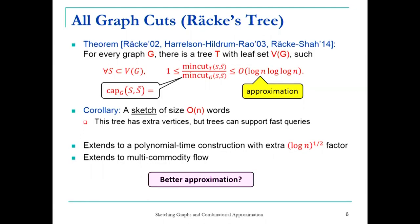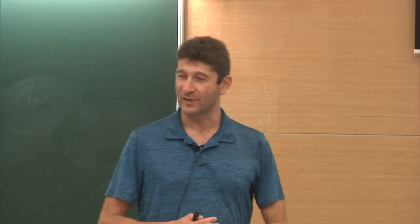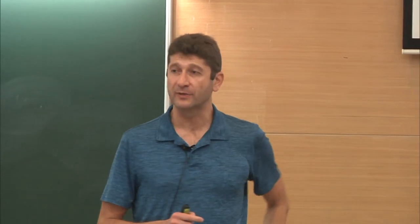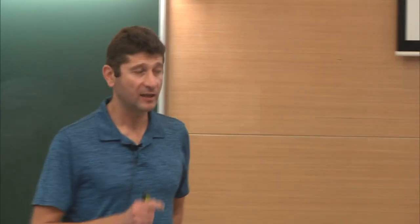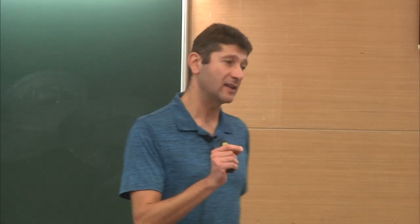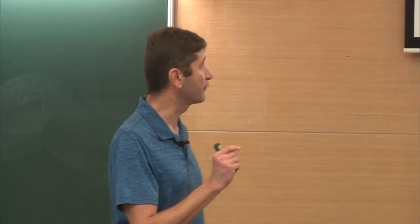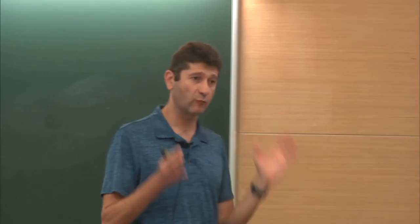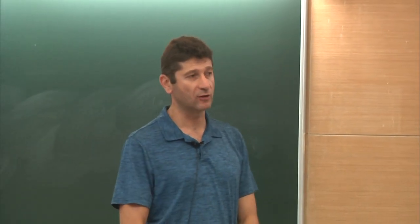So we can do that with an approximately log n approximation. There's actually a result that says log n is optimal if you want to represent all the cuts using one tree — this is true even for a grid. In some sense, the bound of O(log n) on the right-hand side is optimal: if you want to have one tree, you cannot go below log n.